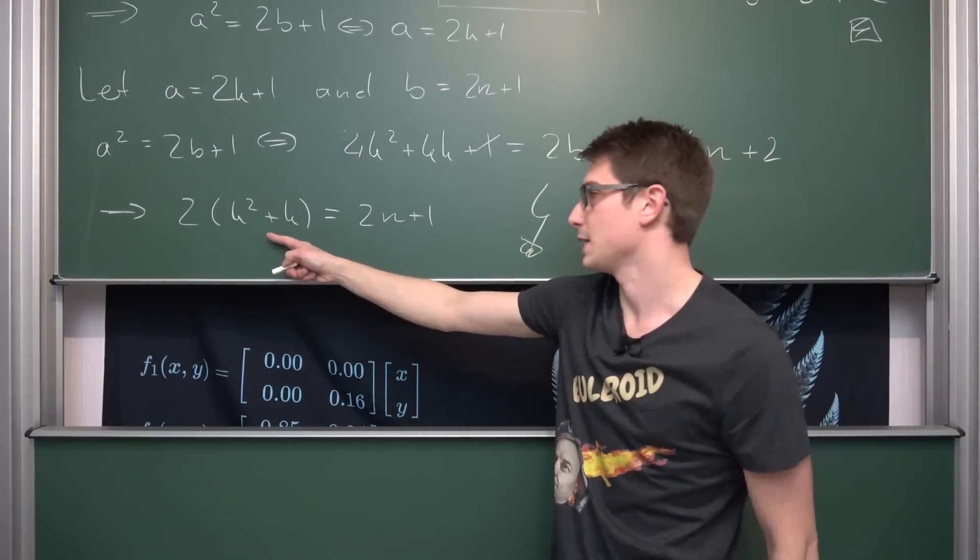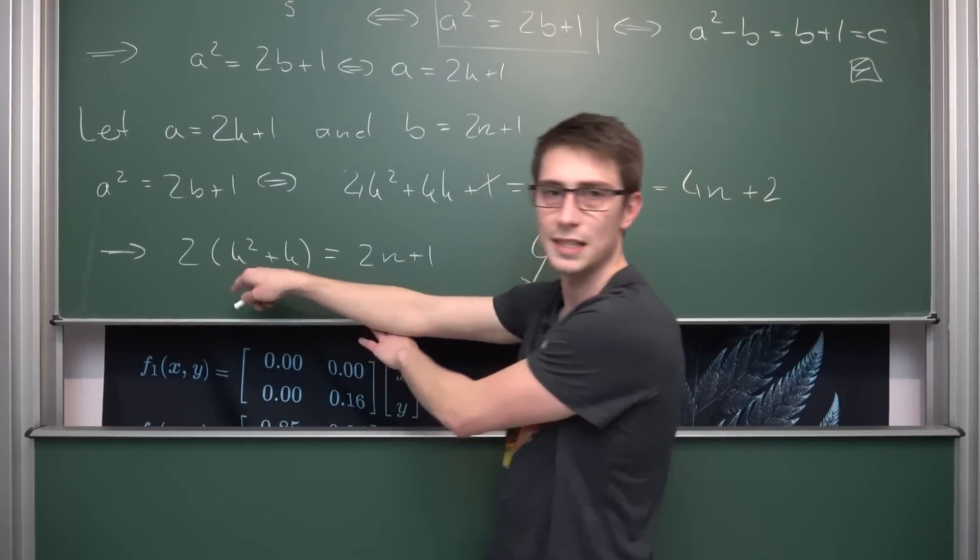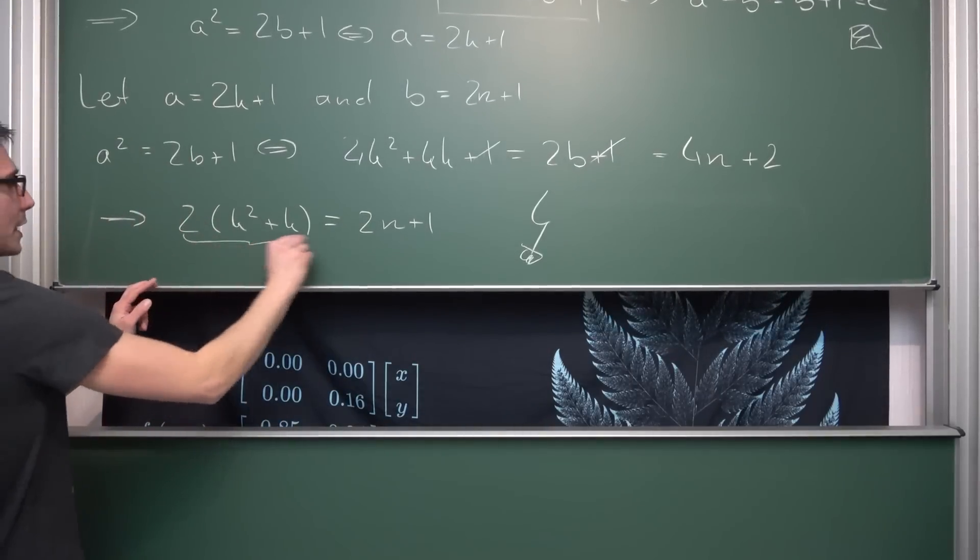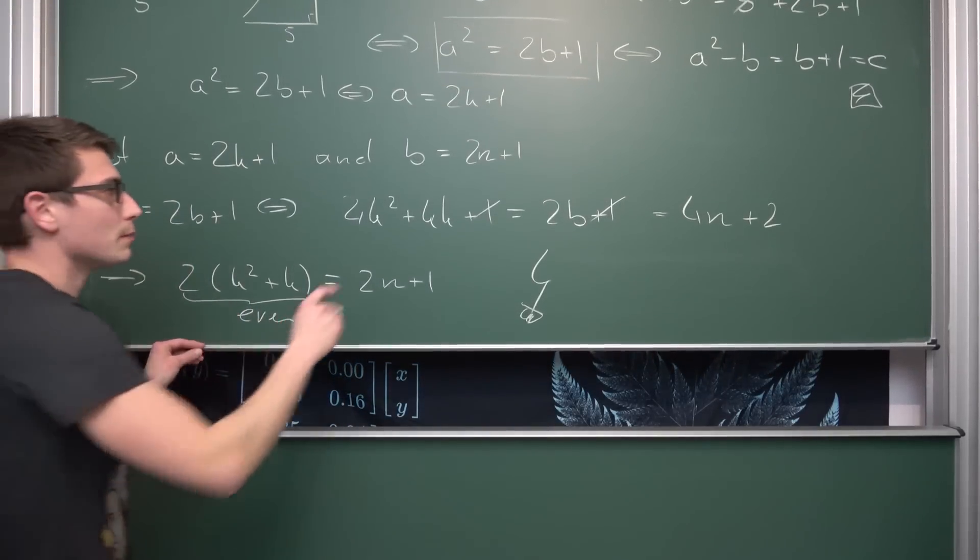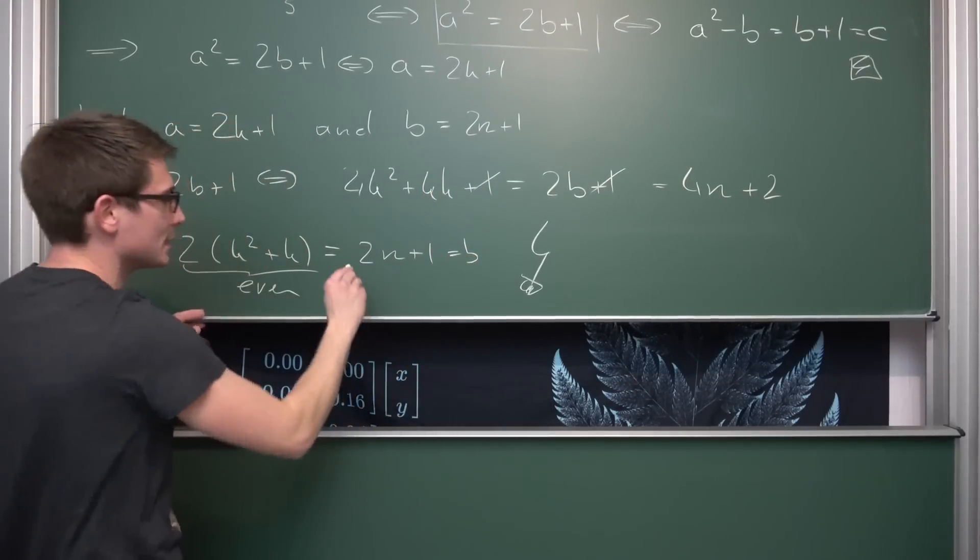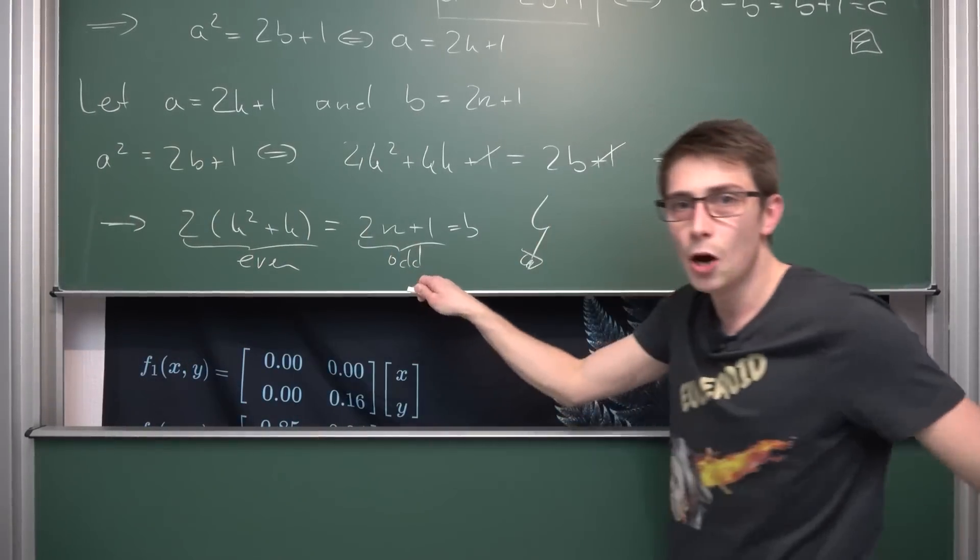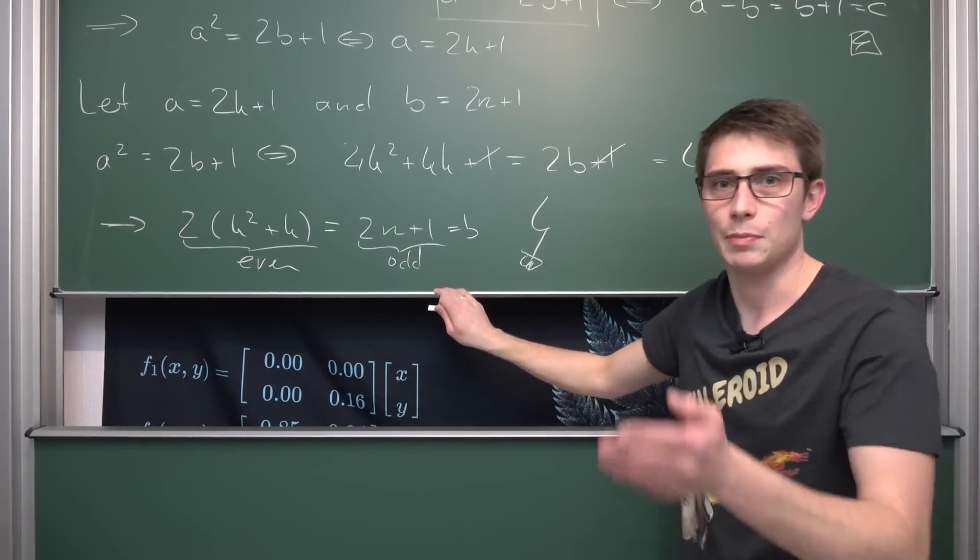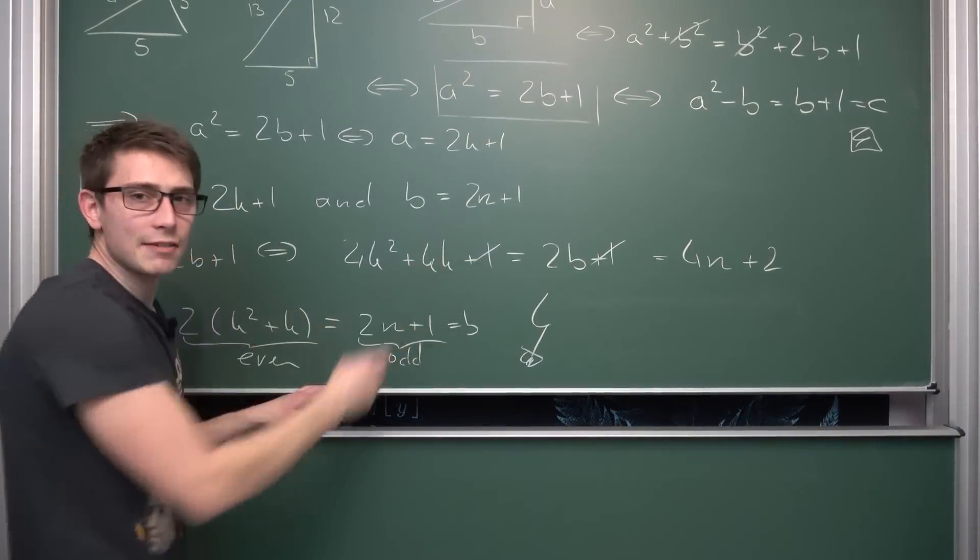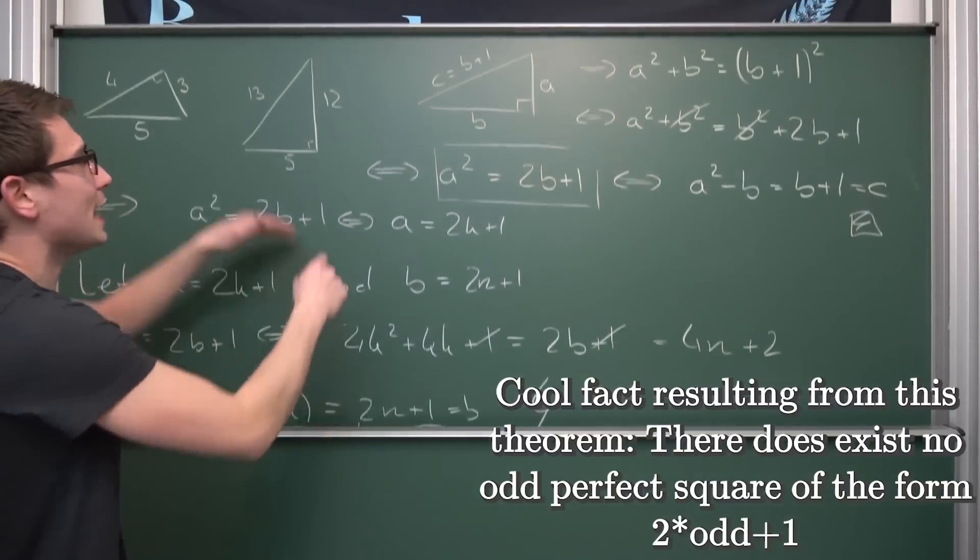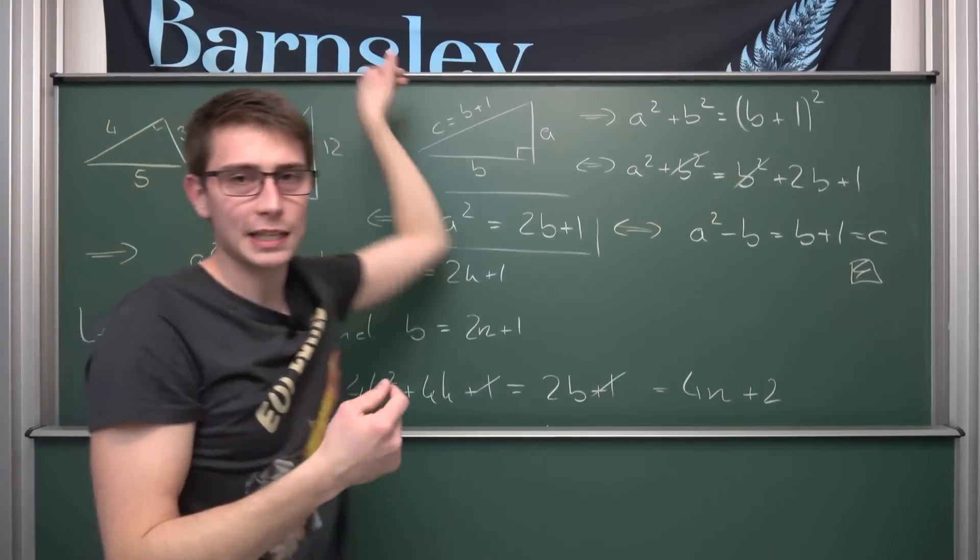And this right here is a contradiction, and I'm going to tell you why that is the case. Namely, what do we have on the left side here? I mean, K, by our definition of an odd number, is going to be an integer, meaning we have 2 times an integer, which is an even number. So this part right here is even, but what do we have here? 2N plus 1. Oh, 2N plus 1, by our assumption, is nothing but B, but this is an odd number. And I think I made a video on that, and a proof on that. Namely, that no natural number or integer can be both odd and even at the same time, meaning we land at a contradiction, meaning overall B is definitely going to be even.